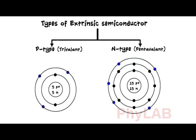The common examples of trivalent are boron, gallium, and indium. And that of pentavalent are phosphorus, arsenic, and antimony.